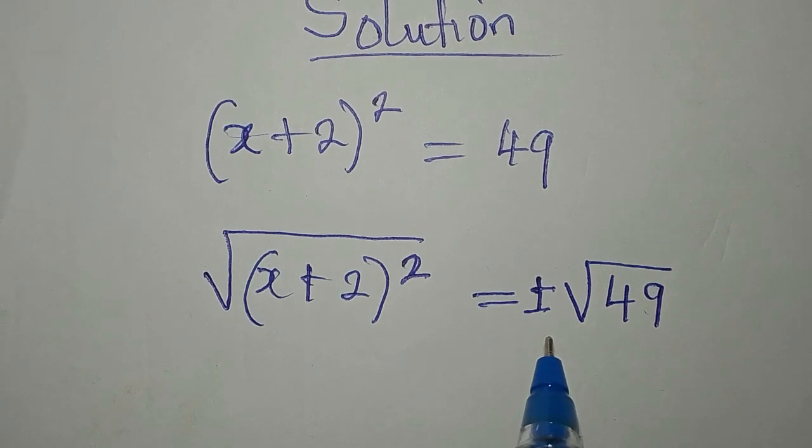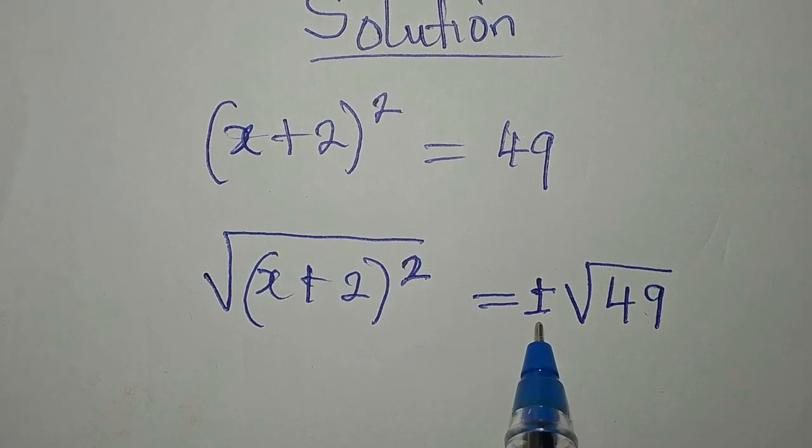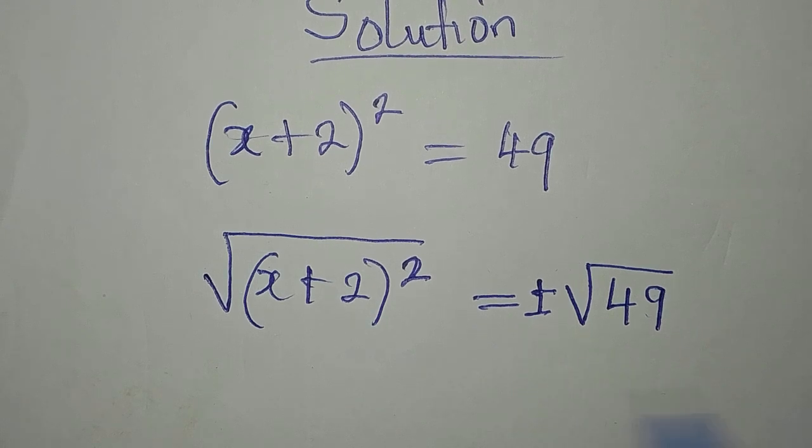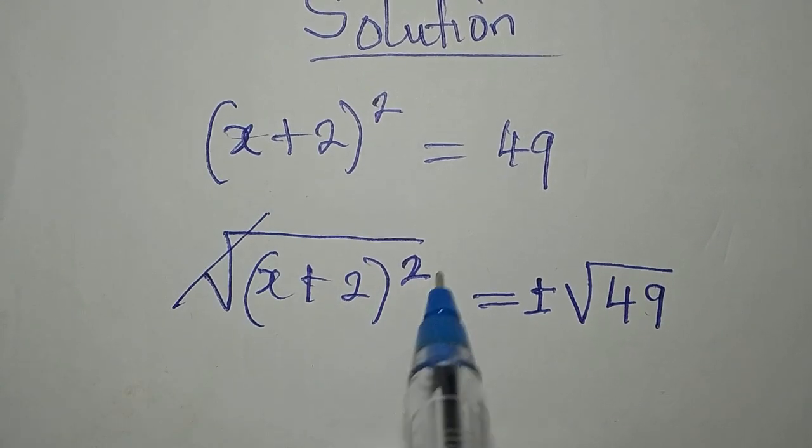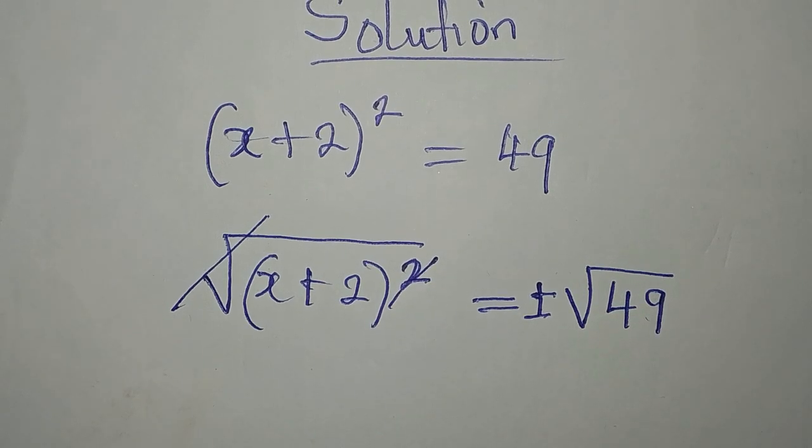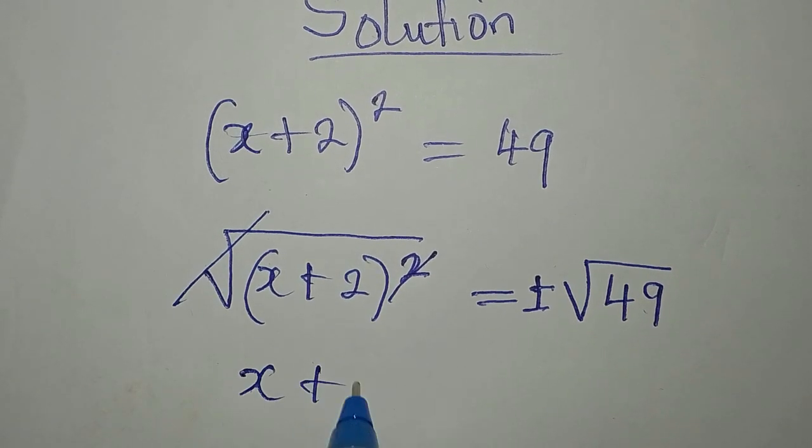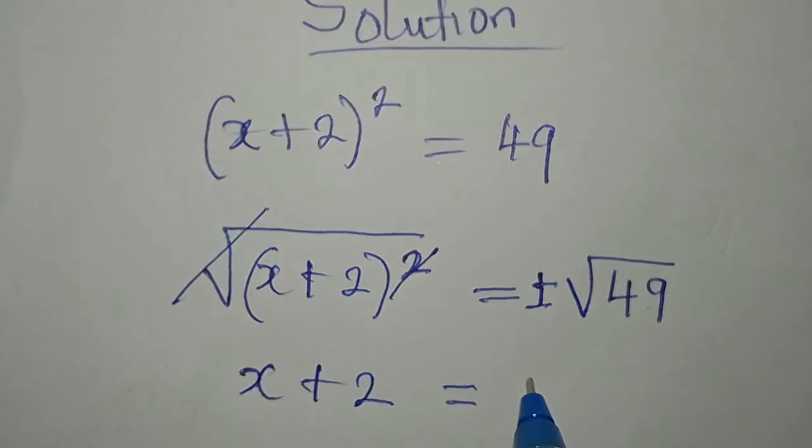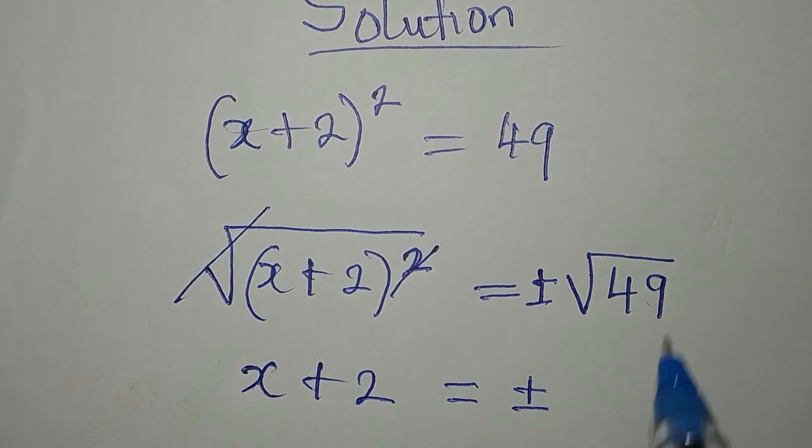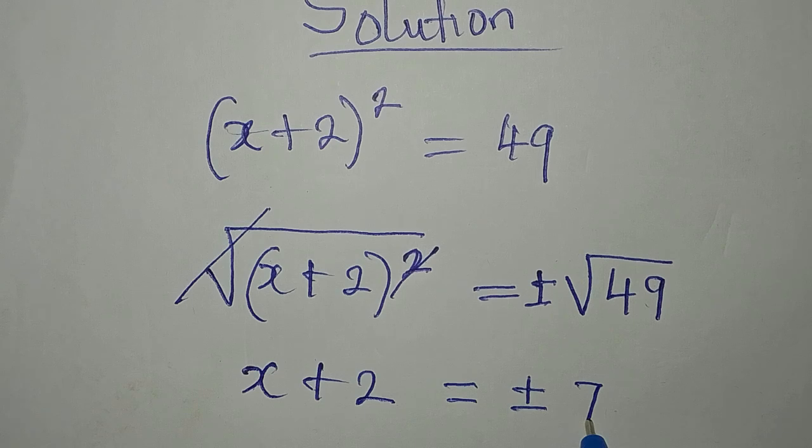The reason for taking the square root is for us to remove the square. So now x + 2 is equal to plus or minus square root of 49, which is 7.